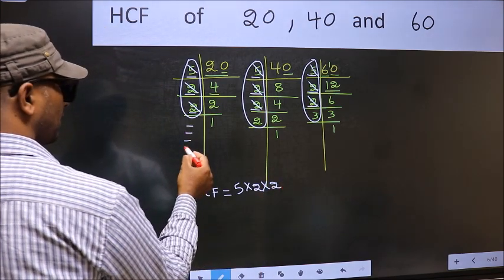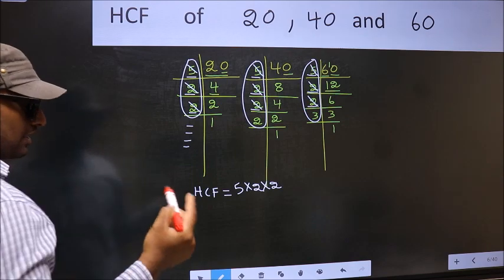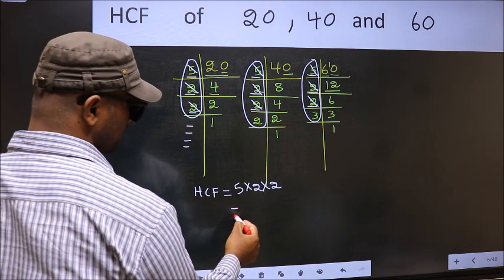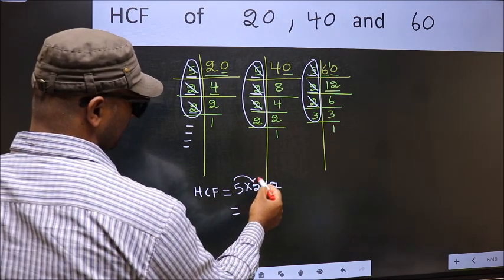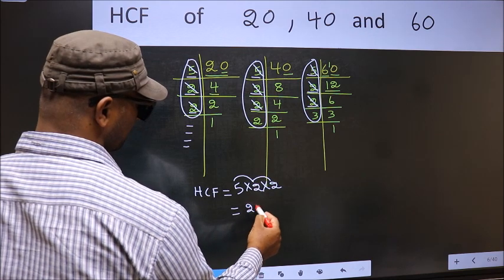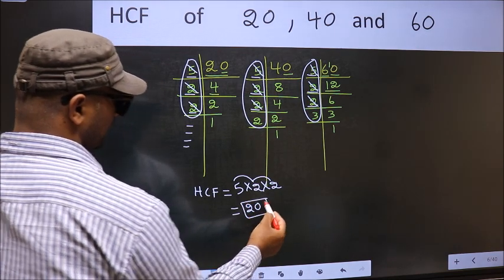No more numbers have been left out. Therefore, HCF is 5 into 2, 10 into 2, 20 is our HCF.